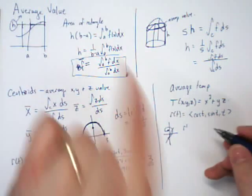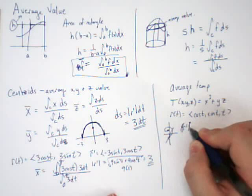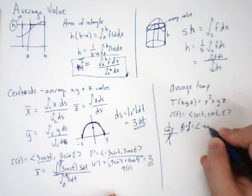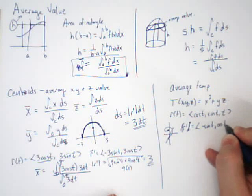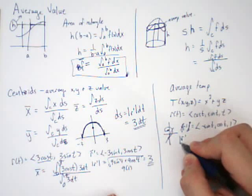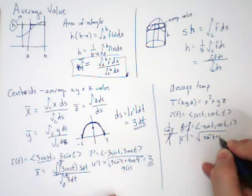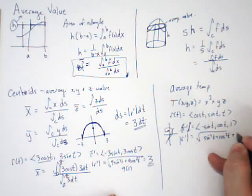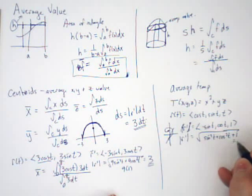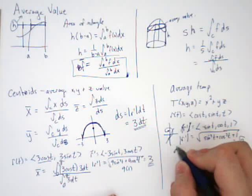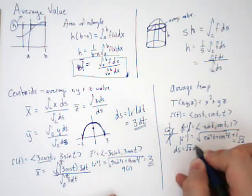First, I need to get R prime, which is negative sine t, cosine t, 1. I need to find the magnitude, which is sine squared plus cosine squared plus 1. This is the same as root 2, which means my dS is root 2 dt.